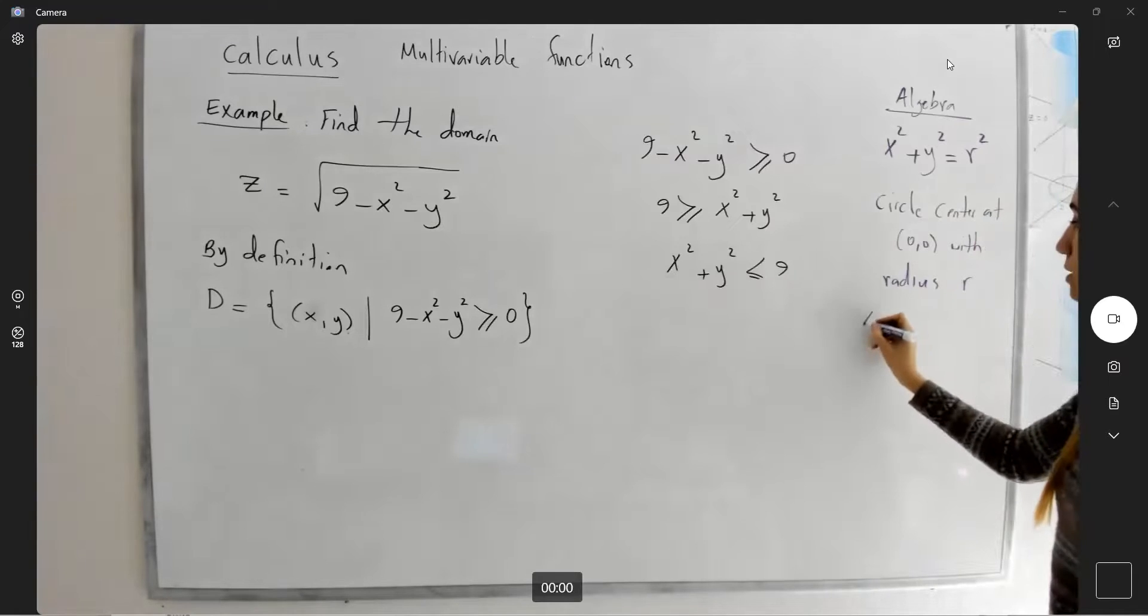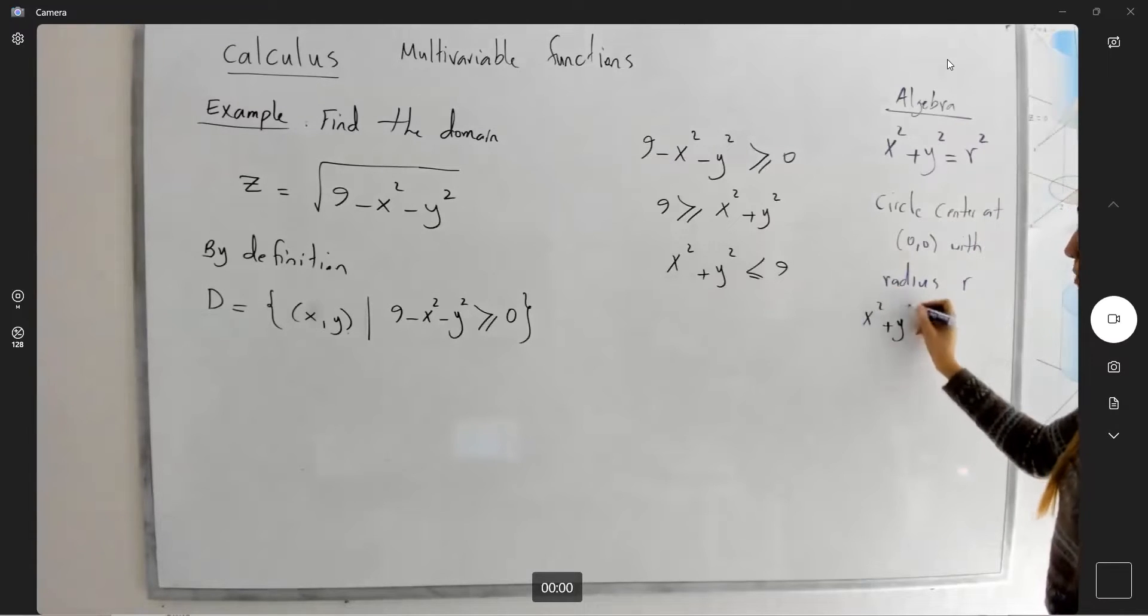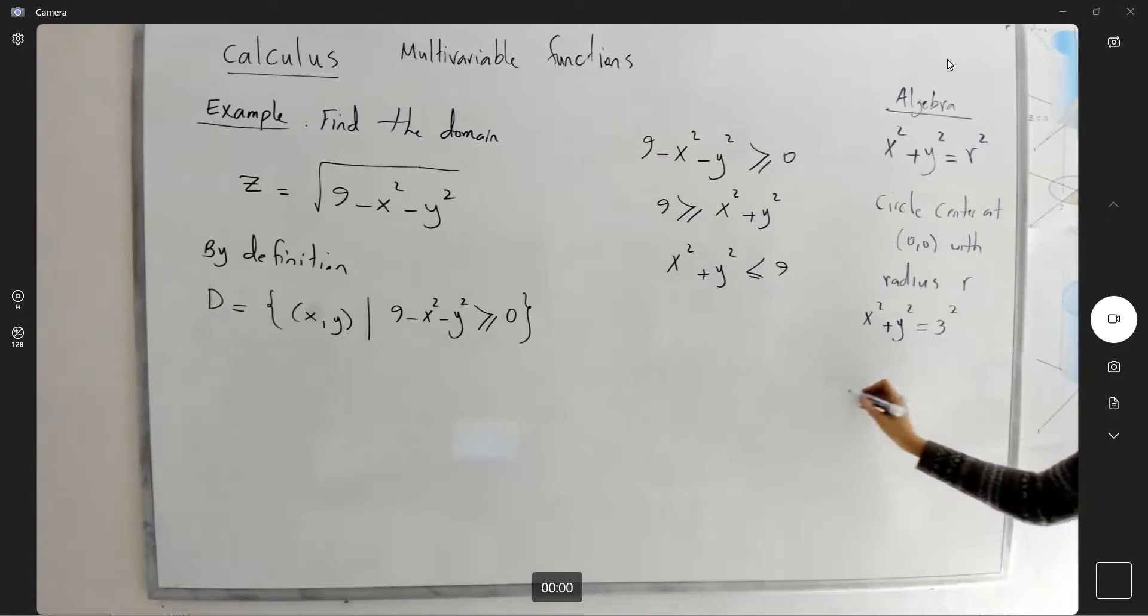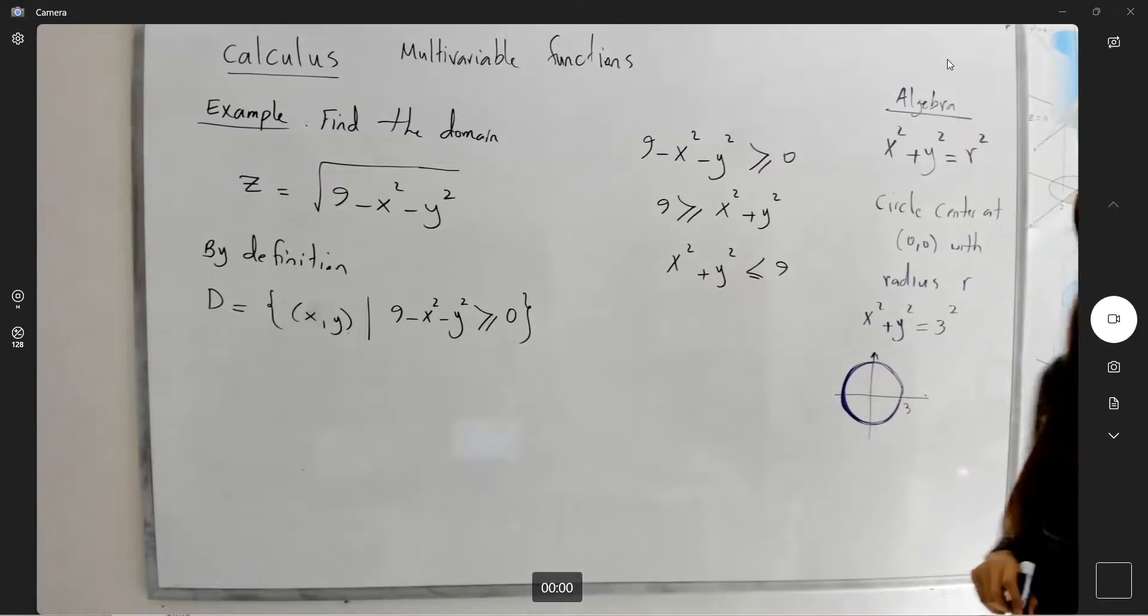So if you consider x squared plus y squared equals 9 or 3 to the second power, this guy is just a circle. Boundary points. Circle of radius 3.